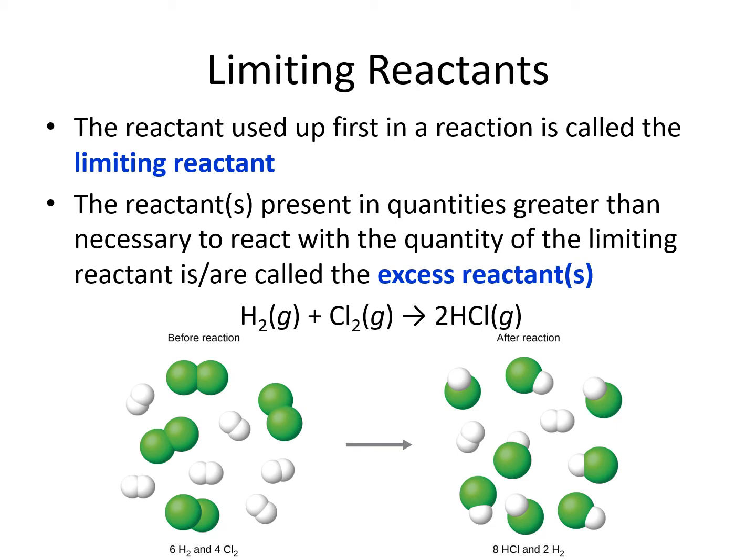So we're going to end up with one of them being extra and the other one getting used up. 4 molecules of H2 and 4 molecules of Cl2 are able to combine to make 8 molecules of HCl. The green chlorines in this picture all get used up. There are still going to be 2 of the white hydrogen molecules left over, which have not reacted with any chlorines. They don't have any binding partners because the chlorines ran out.